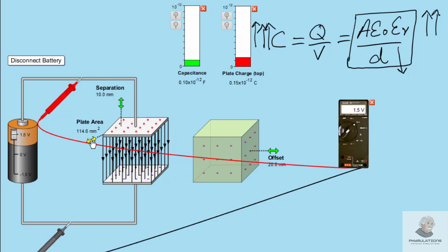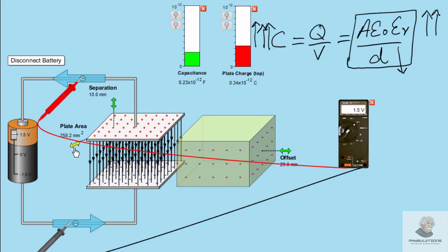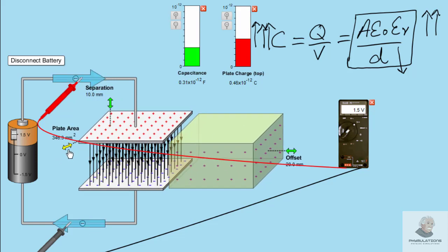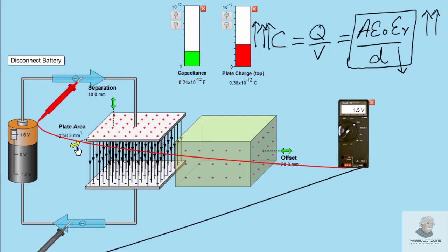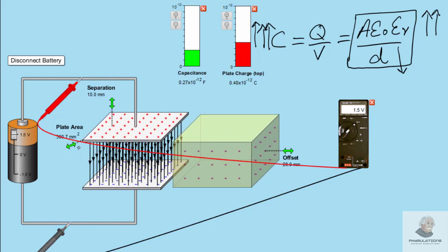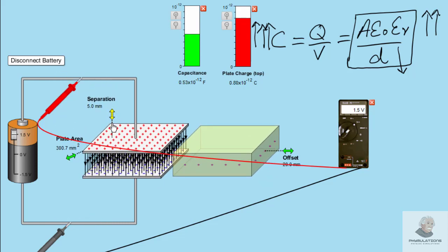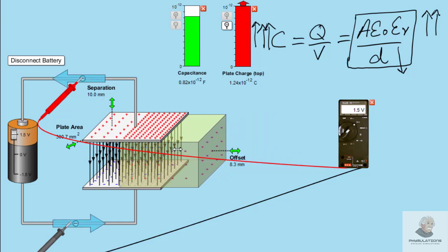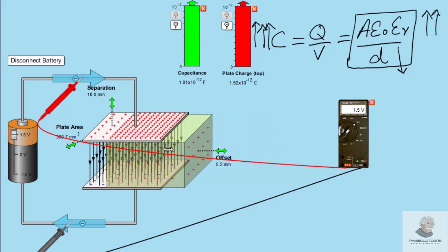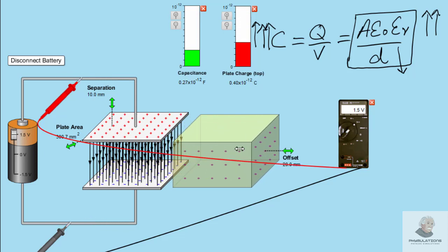I will show all these effects — focus on this graph. First, I am increasing the area of the plates; as the area increases, the green graph of capacitance increases. As I decrease the area, capacitance decreases — capacitance is directly proportional to plate area. Next, if we decrease the distance between the plates, capacitance increases, and if we increase the distance, capacitance decreases. Third, if we add a dielectric medium, capacitance keeps increasing, and if we remove it, capacitance decreases. All these things affect the capacitance of a capacitor.